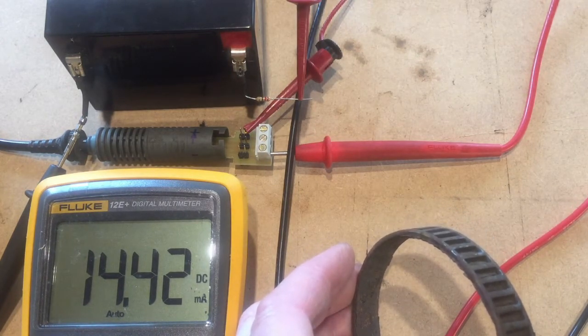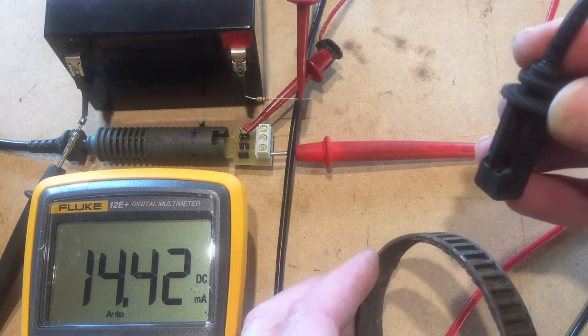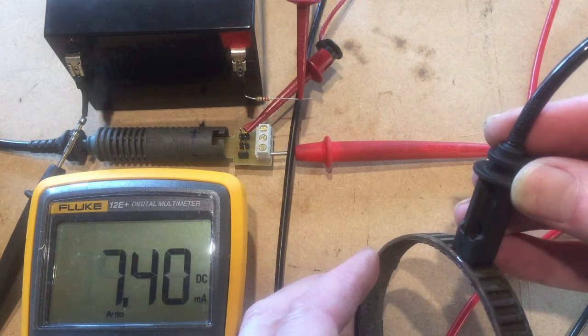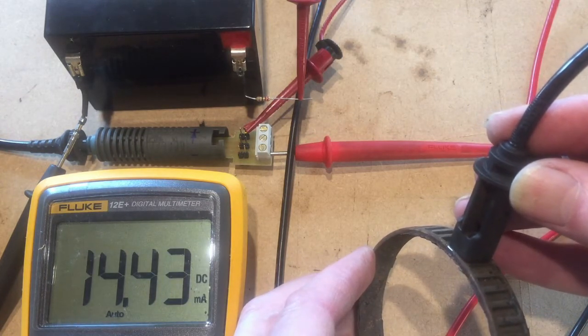Here I am using an old reluctor ring, which was removed from the drive shaft. As I move the sensor along the reluctor ring, the current toggles between 14 milliamps and 7 milliamps.